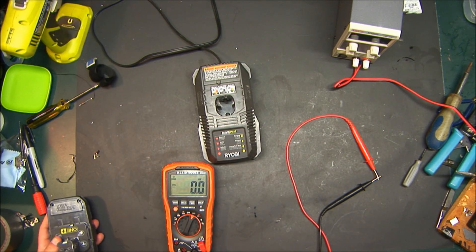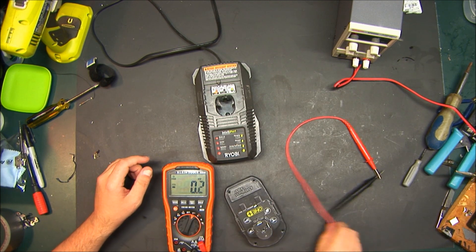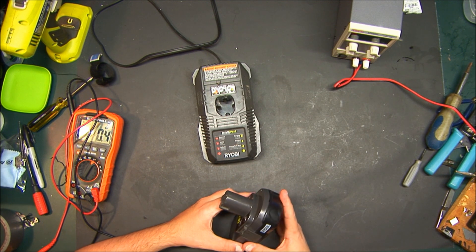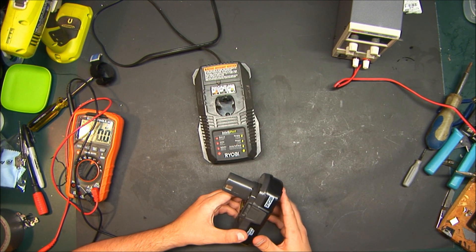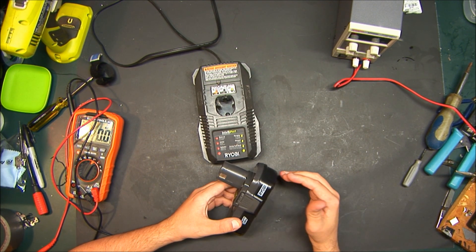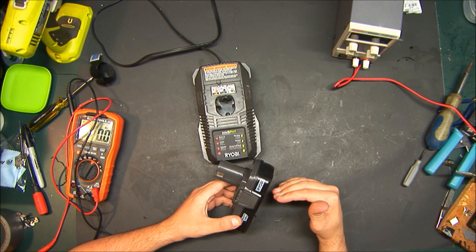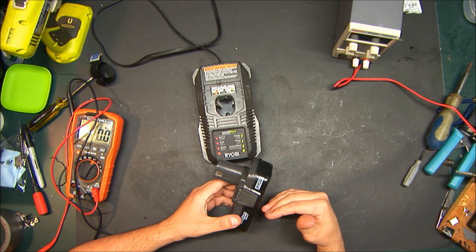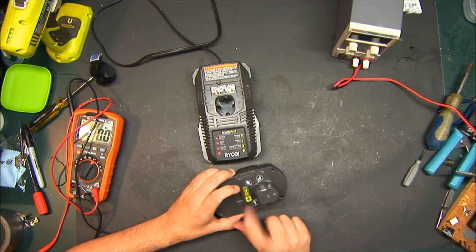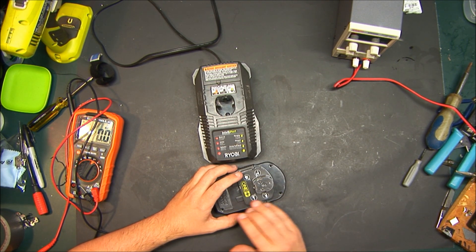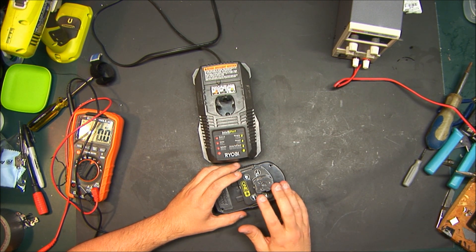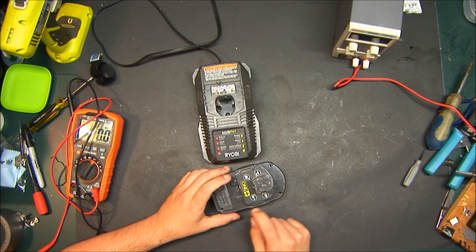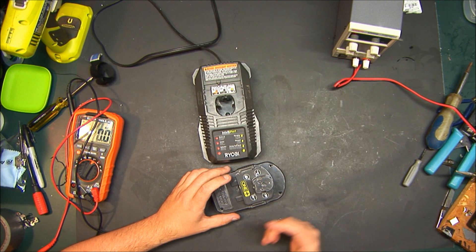It could be a couple things. In these, there are protection circuits to keep them from over-discharging, and there are multiple cells in here. So if one of the cells has become unbalanced, meaning one of the cells has dropped below the voltage threshold, the protection circuit just shuts off. It won't charge it, won't allow any voltage to come out of it, because with lithium cells, if they over-discharge, they can short out internally and explode.